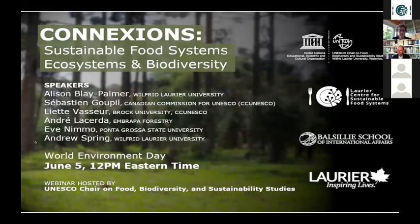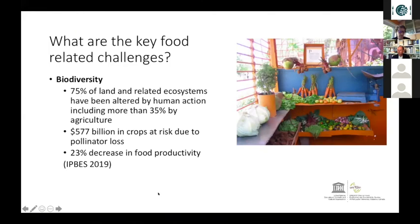One of the pressing concerns is around the issue of biodiversity. Biodiversity loss is both caused by and also impacts food production. As you can see on the slide, 75% of the land and related ecosystems have been altered by human action, including more than 35% by agriculture. One of the effects of this is to put approximately $570 billion in crops at risk every year due to pollinator loss.